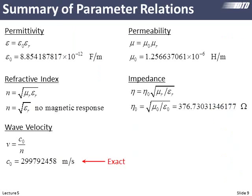We also discussed different parameter relations. This is important — I may give you dielectric constants or refractive index. Optics people tend to use refractive index, while radio frequency and microwave folks tend to use permittivity and permeability, so we need to be able to convert back and forth.